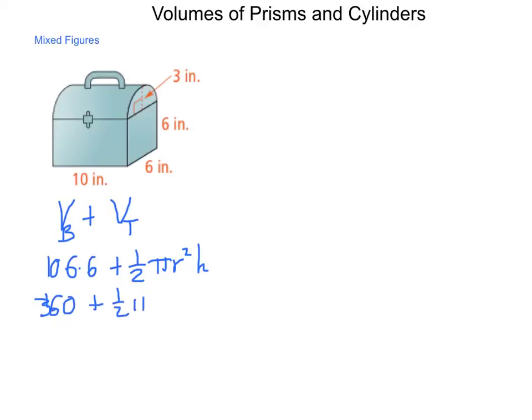Half pi. Our r value is three, so we get nine. Our height, the height of the cylinder is the same as this distance here of the base of the rectangular prism. So, ten.